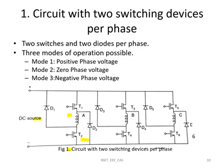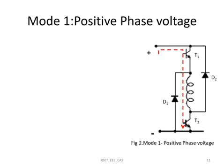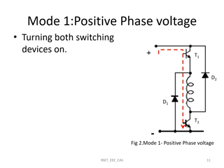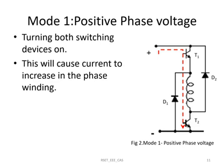The working principle involves three modes of operation: positive phase voltage, zero phase voltage, and negative phase voltage. In mode 1 (positive phase voltage), both switches T1 and T2 are turned on and current starts to flow from the supply to the winding. Energy is transferred from the supply to the winding through switches T1 and T2, and the current in the phase winding increases.